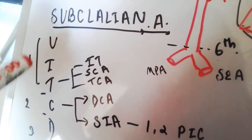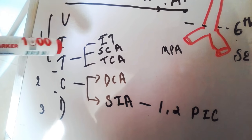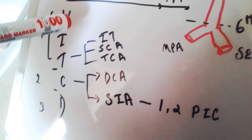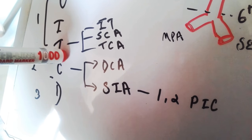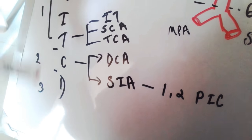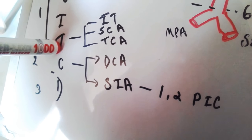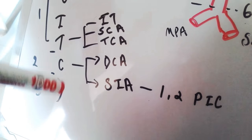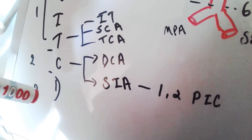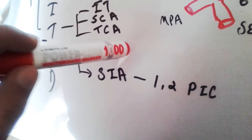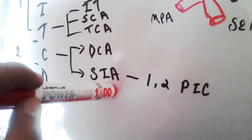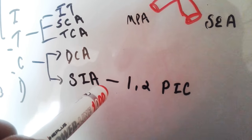For better understanding of the subclavian artery branches, we can use the mnemonic VITaC D: vertebral artery, internal thoracic artery, thyrocervical trunk, costocervical trunk, and dorsal scapular artery. The branches of the thyrocervical trunk are the inferior thyroid artery, suprascapular artery, and transverse cervical artery. The branches of the costocervical trunk are the deep cervical artery and superior intercostal artery.